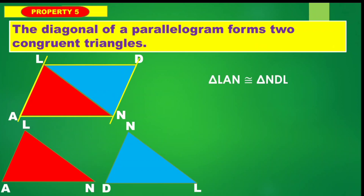We have formed triangle LEN congruent to triangle NDL. Just remember that angle L corresponds to angle N. Therefore, angle L is congruent to angle N.